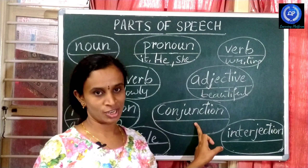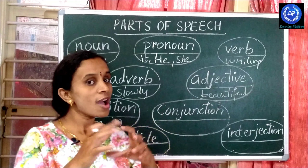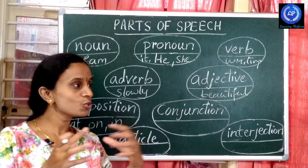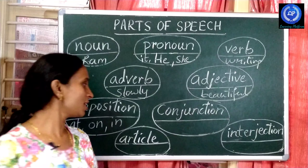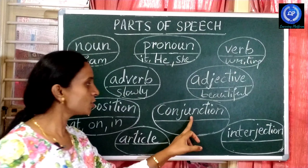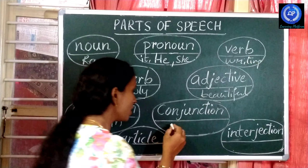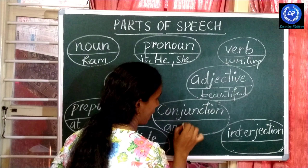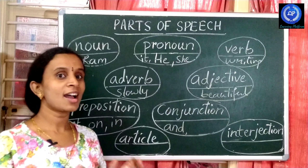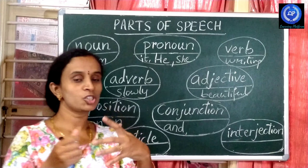Then conjunction. A conjunction is a word which joins two words or two sentences. It is also called a linker or linking word. For example: Ramu and Raju, Sita and Gita — and joins two words.